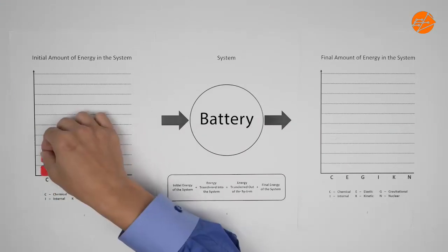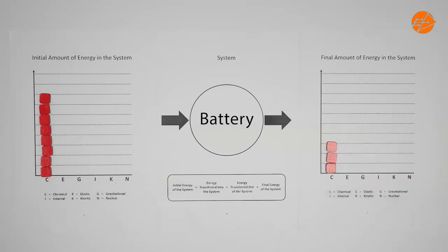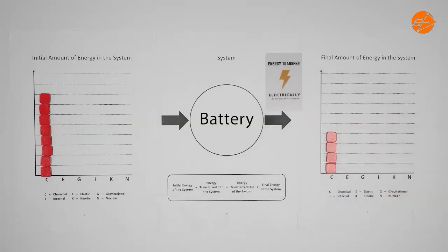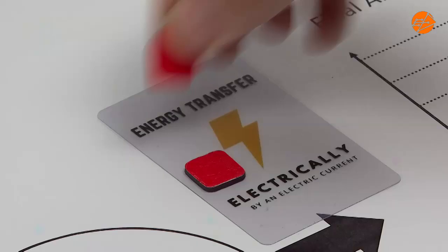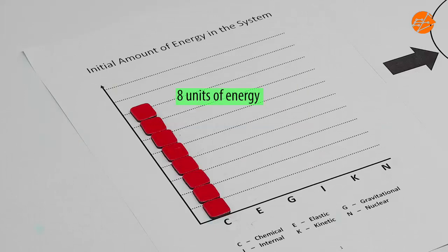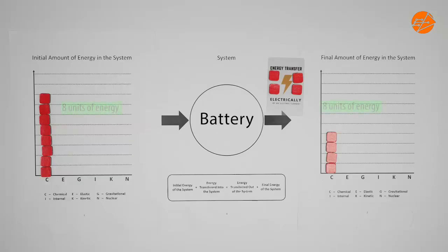Let us look at another way to represent this. This chart shows the amount of energy present at the initial state of the battery, and this one shows the amount of energy at the final state. When we view them side by side, we see that there are 8 units of energy in the chemical store initially and only 4 units in the same store at the end. To account for the difference, I use this transfer card and chips to show that 4 units of energy was transferred out of the battery electrically through an electric current. Notice that no energy was created or destroyed. We had 8 units at the initial state; 4 units remain at the final state and the remaining 4 units were transferred out. The total energy in the start and end states are the same.